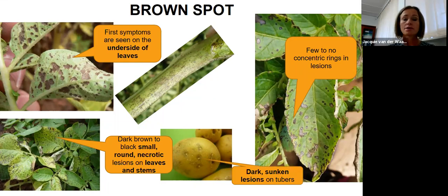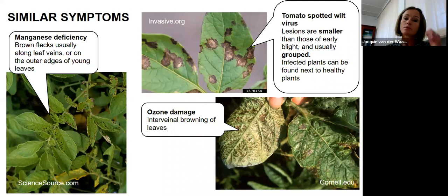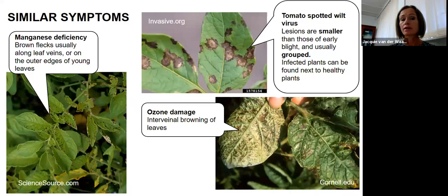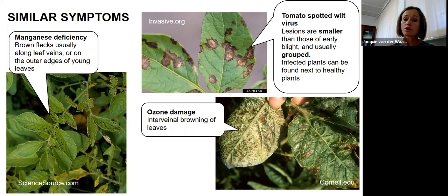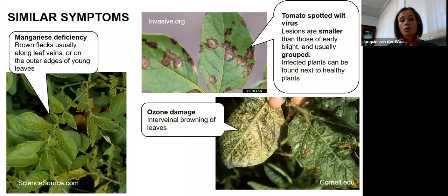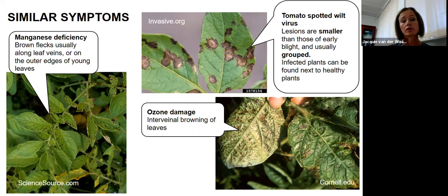Lesions on tubers from brown spot are also dark and sunken. One must remember there are similar symptoms produced by biotic and abiotic factors: manganese deficiency results in brown flecks along leaf veins or outer edges of younger leaves; tomato spotted wilt virus produces similar lesions, often grouped, with infected plants found next to healthy ones because the virus is seedborne; and ozone damage can result in intravenal browning, though it's not exactly the same as brown spot.